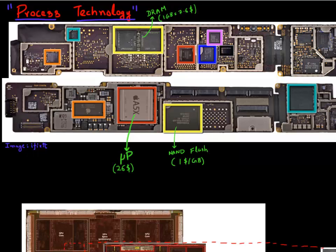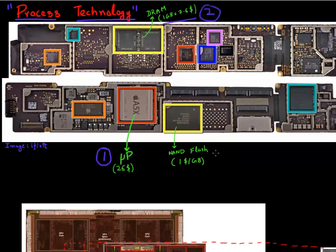If you open up your microprocessor or your memory chip, what does it actually look like if you take a picture from the top or take a cross-section view? I want to briefly describe three of these chips: the first being the A5X microprocessor that you see in your iPad, the second being the DRAM chip, and the third being NAND flash memory.